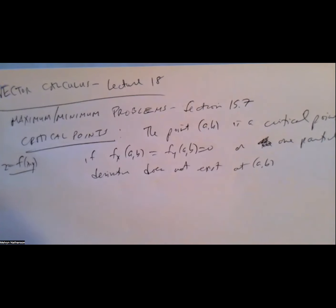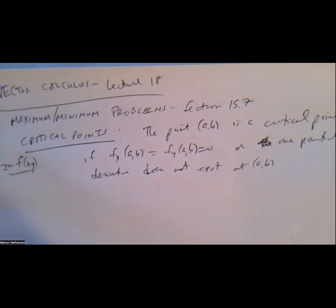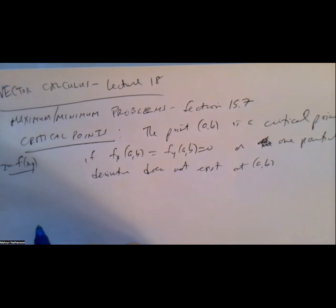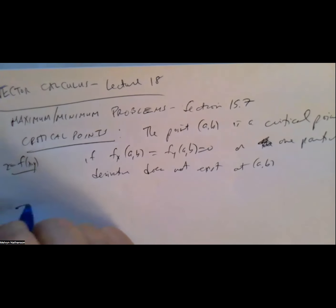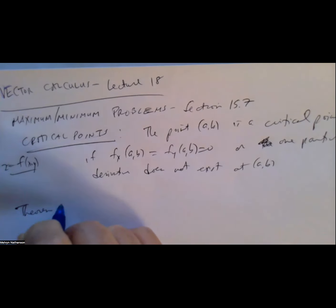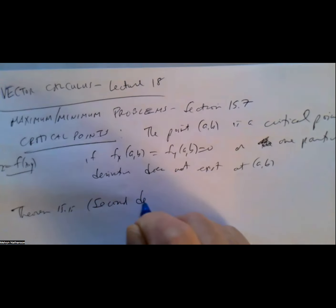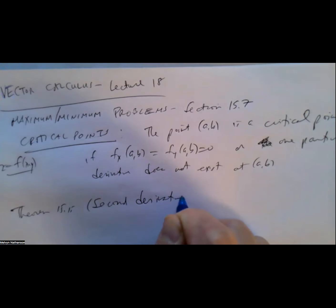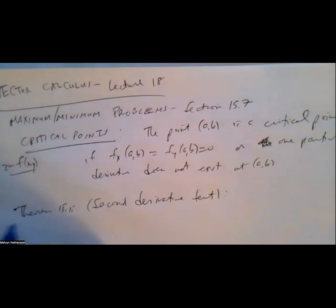Wherever in the interior of a region there's a local maximum or minimum, the two partial derivatives will be zero and you'll be at a critical point. If the two partial derivatives are zero, then every directional derivative is zero. But being a critical point doesn't distinguish minimum from maximum. For that, we use Theorem 15.15, which is the second derivative test.